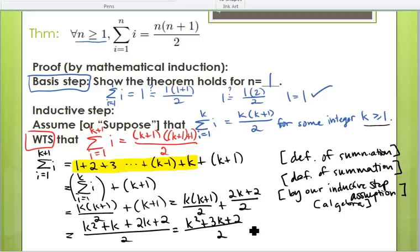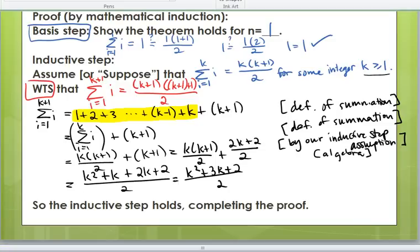And I would like to write this on a new line. Okay, so we'll say that all equals k plus one times k plus two over two. We just factored that.